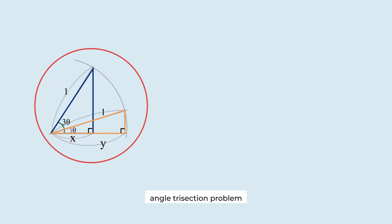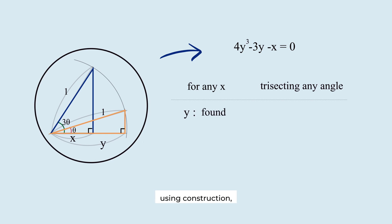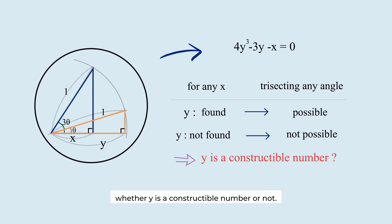Now, angle trisection problem is all about finding y given x. If y could be found for any x using construction, then we could trisect any angle. But if it's not always possible, then trisection isn't always possible. So, the answer lies in whether y is a constructible number or not.